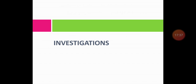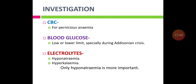Investigations for adrenal insufficiency: routine investigations include complete blood count — hemoglobin will be low if pernicious anemia is suspected. Blood glucose level is low or at the lower limit, especially severe in Addison's crisis. Electrolytes show decreased sodium (hyponatremia) and increased potassium (hyperkalemia); hyponatremia is more important than hyperkalemia.